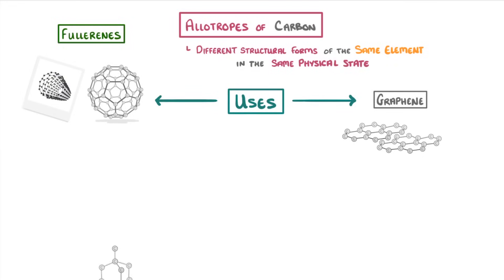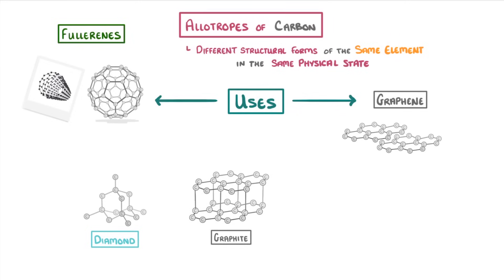In that video, we looked at the allotropes diamond and graphite, and saw that graphite is made up of lots of layers. Each of these layers is known as graphene, and their structure of multiple repeating hexagons, with each carbon being bonded to three other carbons, makes them really strong.